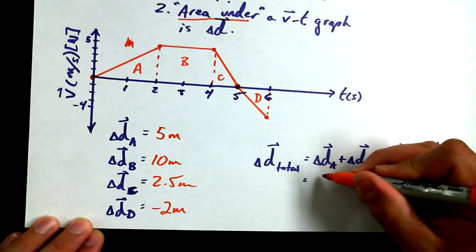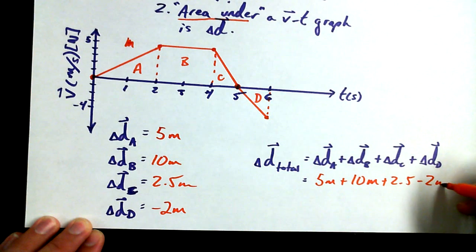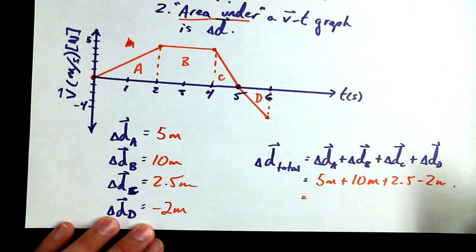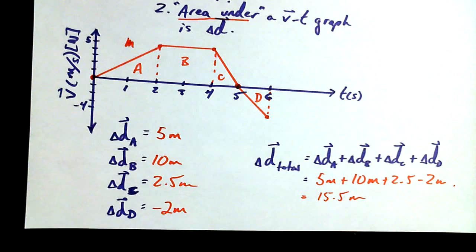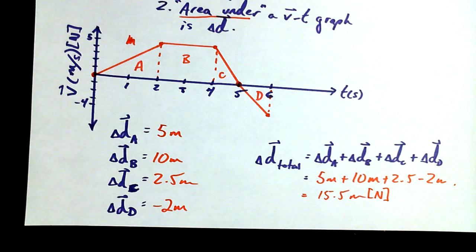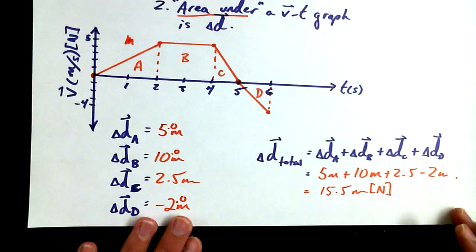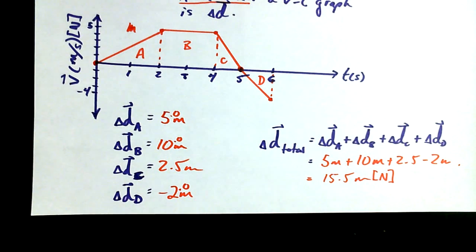So negative 2 meters or 2 meters south. So we can plug in all of our values. 5 meters plus 10 meters plus 2.5 meters minus 2 meters. 5 plus 10 is 15 plus 2.5, 17.5 minus 2. So we're going to end up getting 15.5 meters north. And I haven't been too picky with the significant digits here. Really, we should be two significant digits because this could be 5.0, 10.0, 2.5, and 2.0. So strictly speaking, we should be sticking to one decimal place because it's an addition problem. I'm not going to worry too much about that.